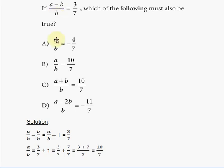And as you know, b over b is one, so that's going to be a over b minus one, and that equals three over seven. That means a over b is going to be what? We just add one on both sides.